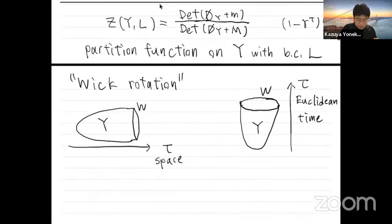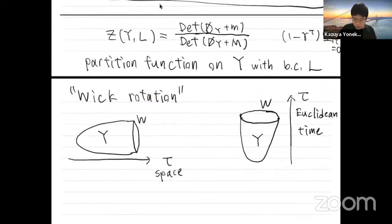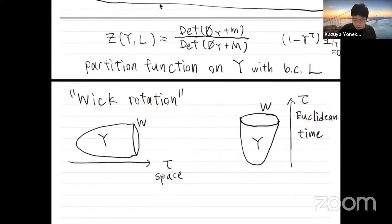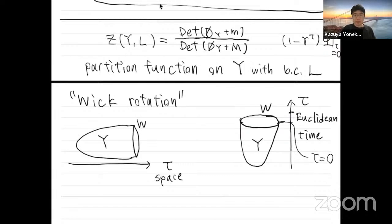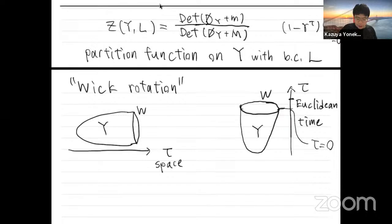So we can see the system in a new way. In this interpretation of the manifold, the tau direction is now a Euclidean time direction, and W is a time slice — this is a time slice at tau equal 0.